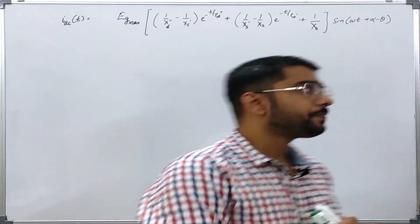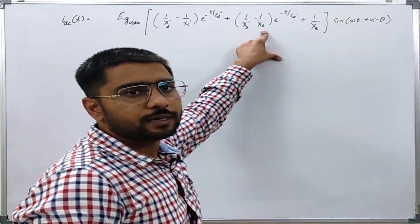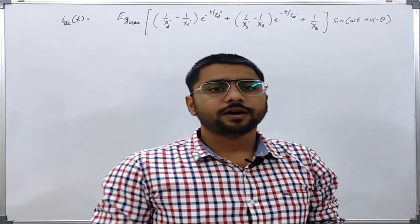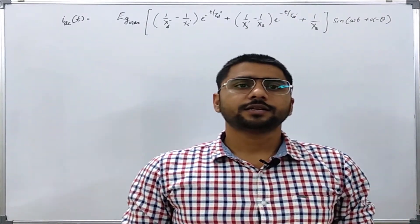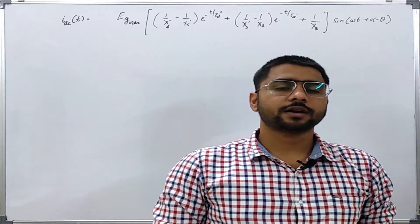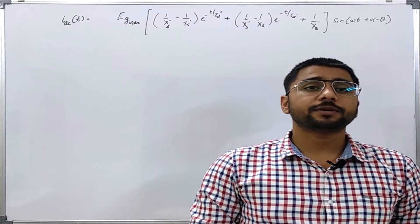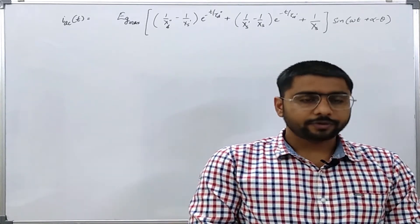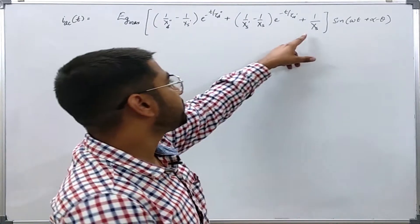For a round rotor machine, there is no direct axis or quadrature axis reactance. There is one reactance which is usually called the synchronous reactance. However, when the machine is salient pole, then we will have to clarify what this axis means.